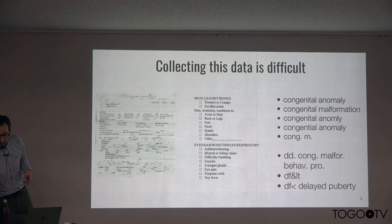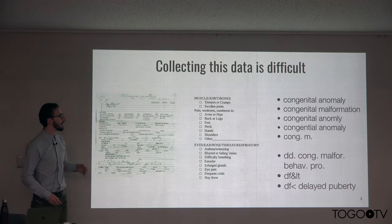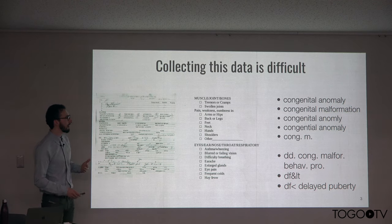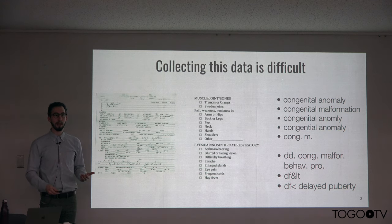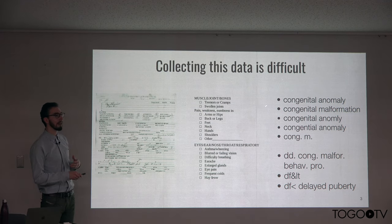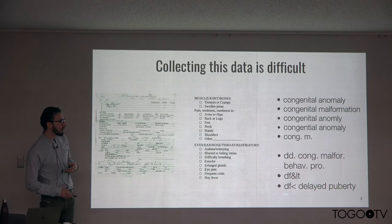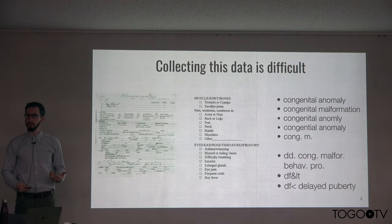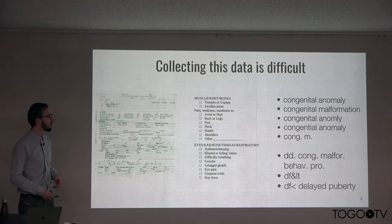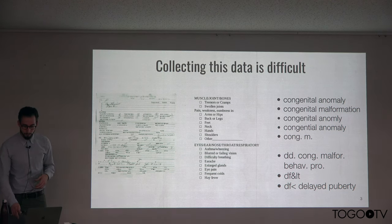One of the things we found in a collaboration that started the Phenotips project was that as soon as you ask for unstructured textual information about a patient's presentation, there is considerable variability in the way that the same concept might be represented — lots of different ways of writing the same thing, lots of abbreviations, and even things that when you ask genetic counselors or clinicians afterwards what they meant, it isn't necessarily clear or unambiguous.